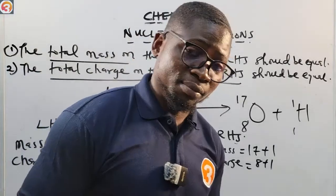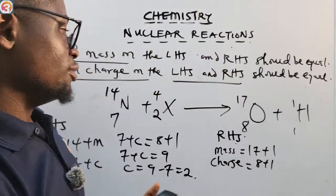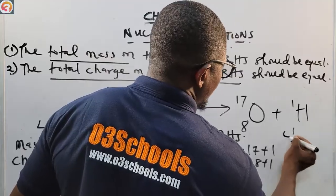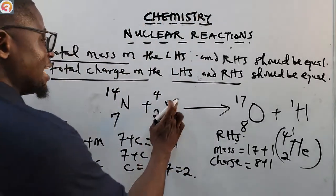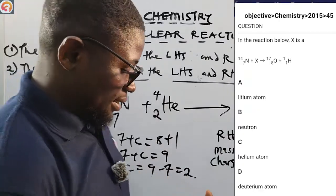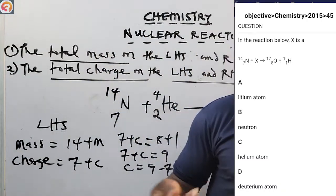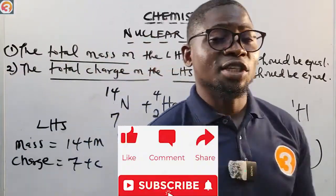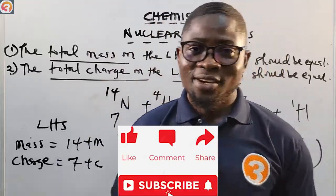So X has mass number 4 and charge 2. Looking at the options — A) lithium atom, B) neutron, C) helium atom, D) deuterium — the correct answer is C, helium atom, because helium has a mass number of 4 and a charge of 2. It's as simple as that. I'll see you in the next class where we continue our study on radioactivity. Thank you for watching — keep sharing, keep liking, and drop a comment!